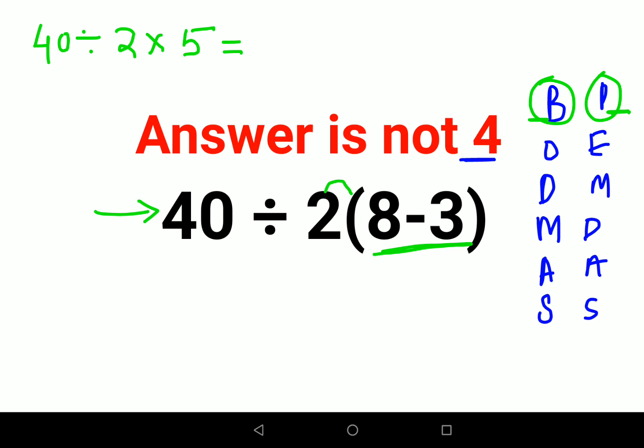Now in this case what do you do here? See what happens is after this the discrepancy starts happening. Because in BODMAS you do division first and multiplication later, and in PEMDAS you do multiplication first and division later.